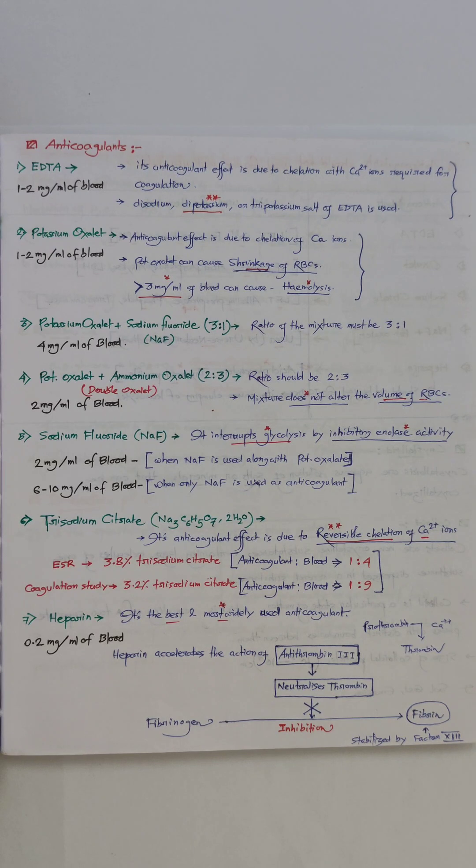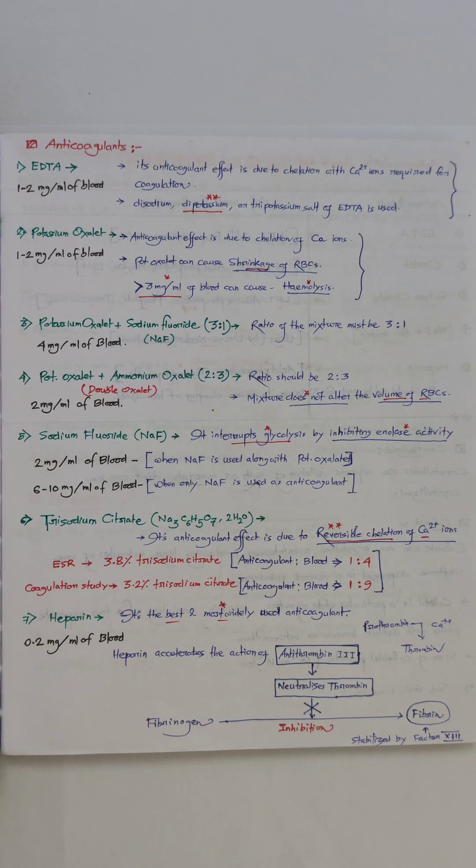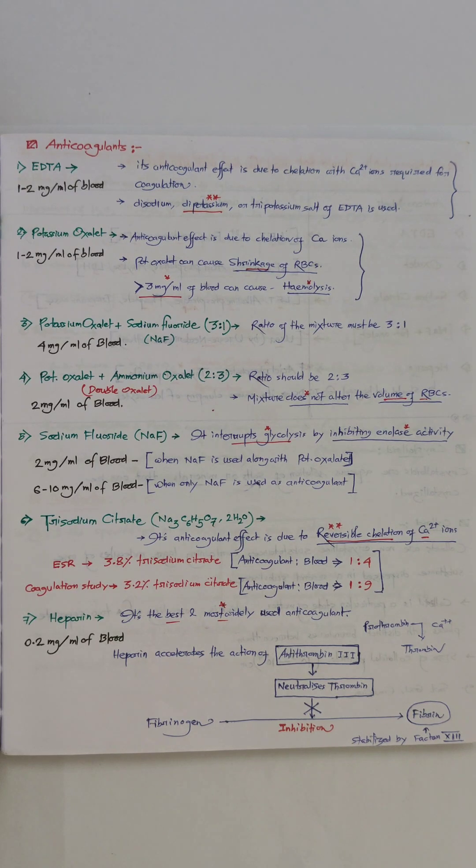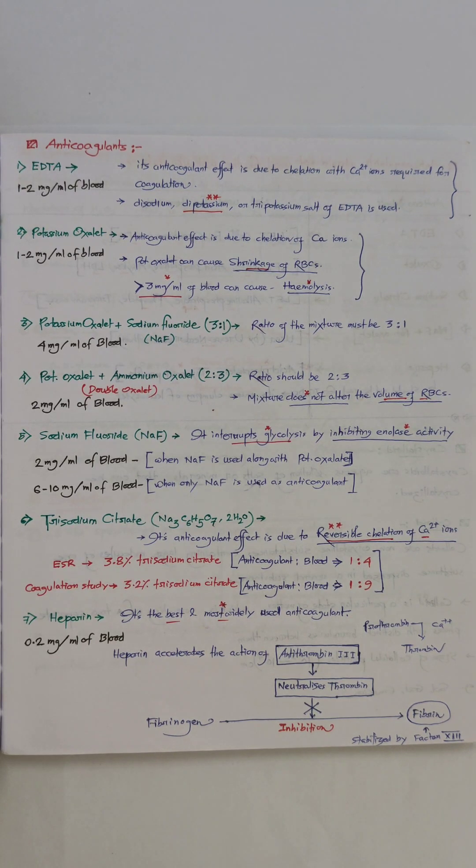Number one is its mode of action and number two is its required quantity. For EDTA, 1 to 2 milligrams per ml of blood is required and its mode of action is chelation with calcium ion. Usually disodium, dipotassium, or tripotassium salts of EDTA are used.